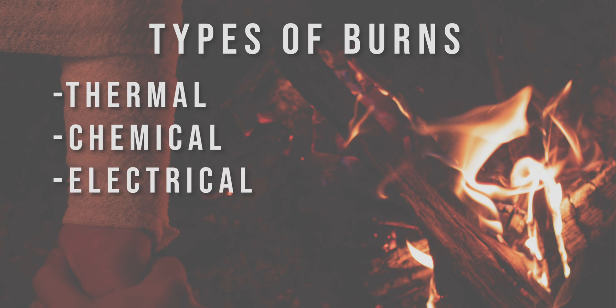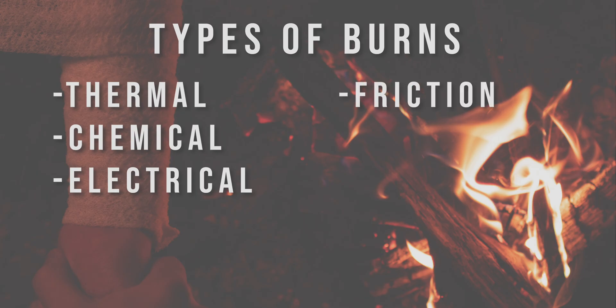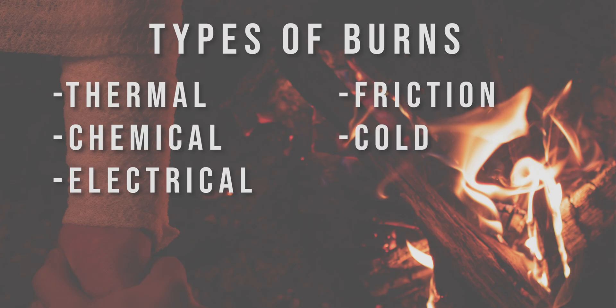A chemical burn comes from a chemical reaction from a harsh chemical on the skin, not a thermal process. Another type is an electrical burn — when an electrical current travels through a person from higher to lower voltage. You also have friction burns like rug burn or road rash, cold burns like severe frostbite from touching something extremely cold, and radiation burns such as UV radiation from the sun.